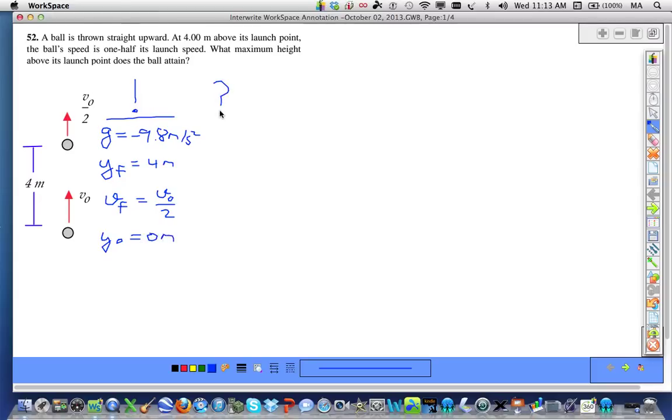Under the unknown column, what is the maximum height? Which we don't know. And I'm going to place under my unknown column v-naught. And this is where I'm going to begin the problem solving.